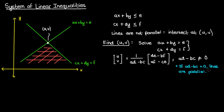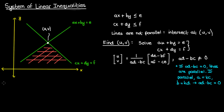When ad minus bc is zero, the lines are actually parallel and so there is no point of intersection. This makes sense because if the lines are parallel then a and b are both multiples of c and d, and if a and b are both multiples of c and d then it's easy to verify that ad minus bc would be zero. So we found the point of intersection — but how do we use it to find the region of the inequality?